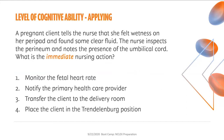Let's take a look at a sample question addressing the cognitive ability level of applying. A pregnant client tells the nurse she felt wetness on her peri pad and found some clear fluid. The nurse inspects the perineum and notes the presence of the umbilical cord. What is the immediate nursing action? One, monitor the fetal heart rate. Two, notify the primary health care provider. Three, transfer the client to the delivery room. Or four, place the client in the Trendelenburg position.